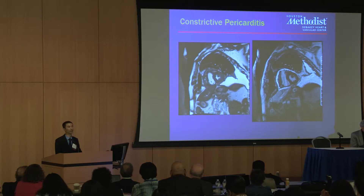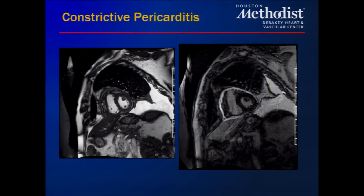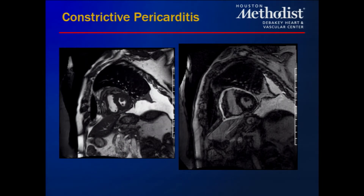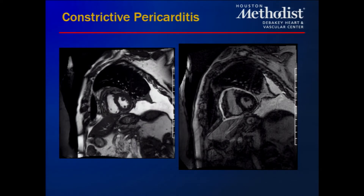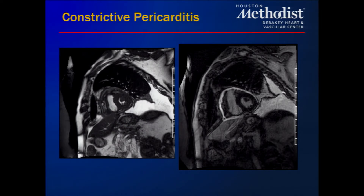Expanding on delayed enhancement, cardiac MRI also helps answer questions about pericarditis. Shown here is a patient with constrictive pericarditis where the cine demonstrates very increased thickening like a rind around the heart, and the late contrast image shows diffuse enhancement appearing as bright white, supporting that the pericardium is actively inflamed and leaky.